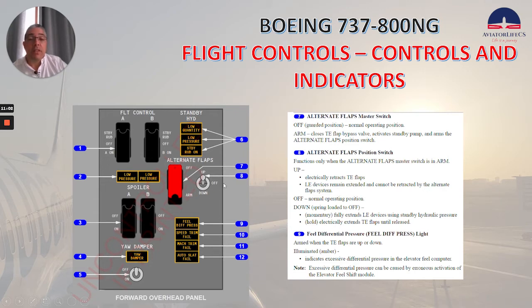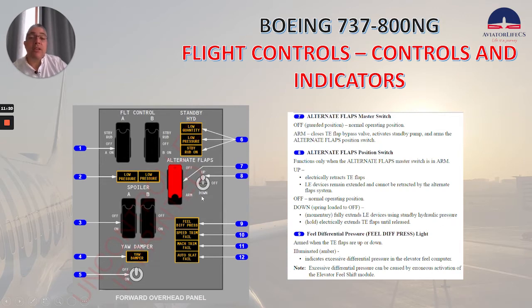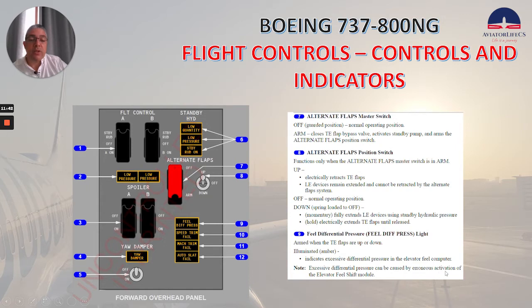Off is the normal operating position. In down — spring-loaded to off — if pressed momentarily, it fully extends leading edge devices using standby hydraulic pressure. If held, it electrically extends trailing edge flaps until released. Field differential pressure light: armed when the trailing edge flaps are up or down. Illuminated amber indicates excessive differential pressure in the elevator feel computer. Note: excessive differential pressure can be caused by erroneous activation of the elevator feel shift module.